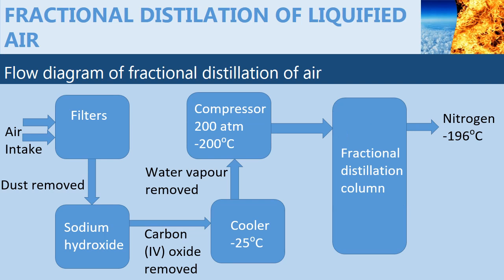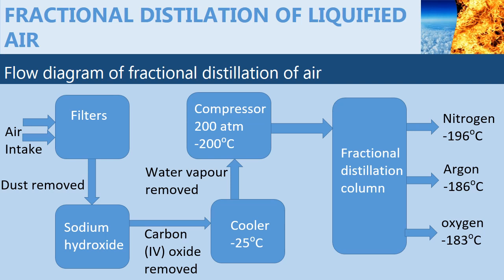Nitrogen is collected as the first fraction because it has a lower boiling point. Then argon, which is mainly the major component of noble gases, is collected as the second fraction. And oxygen is collected as the final fraction.